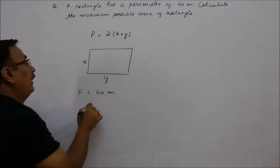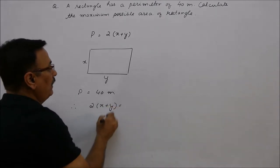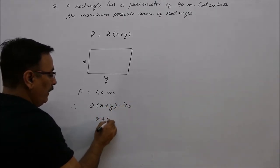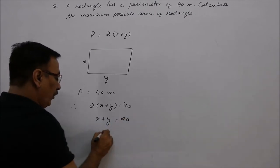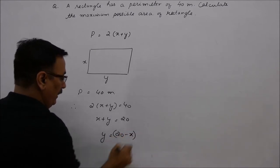So therefore, we can see here 2x plus y is equal to 40. This means x plus y is what? 40 divided by 2 is 20. And what can we see here? Y is equal to 20 minus x.